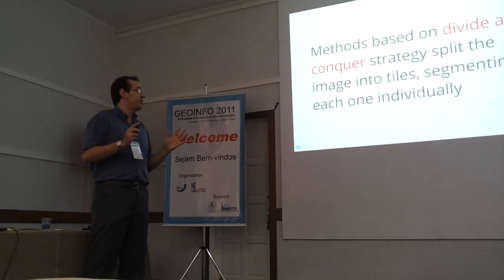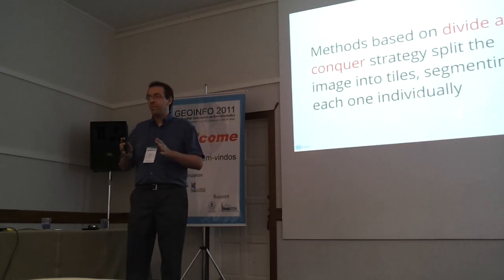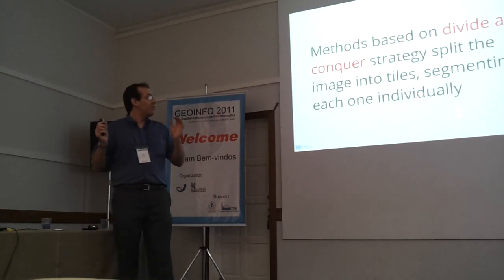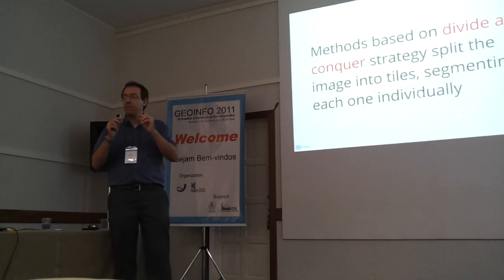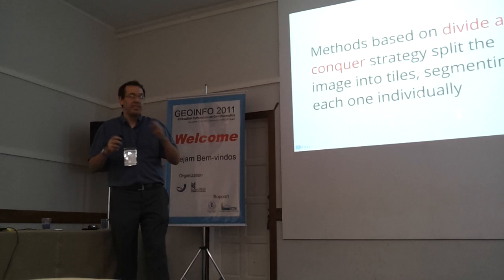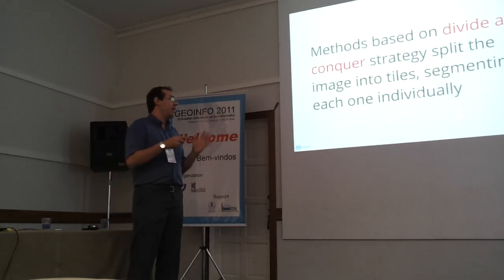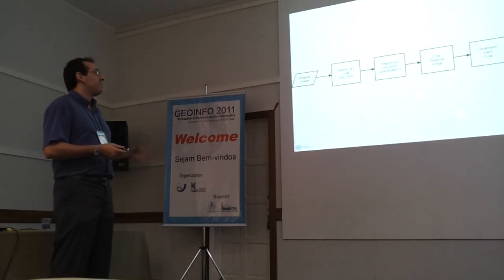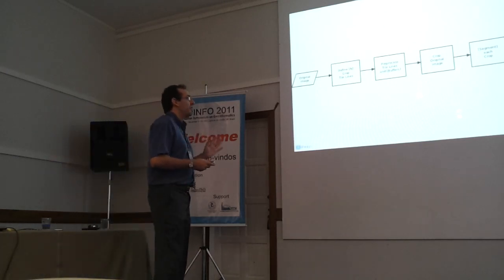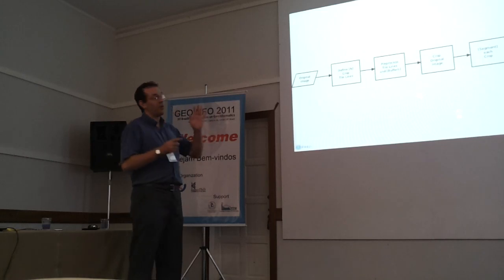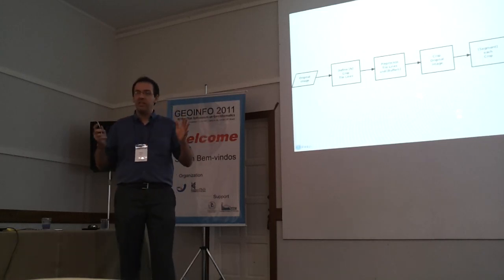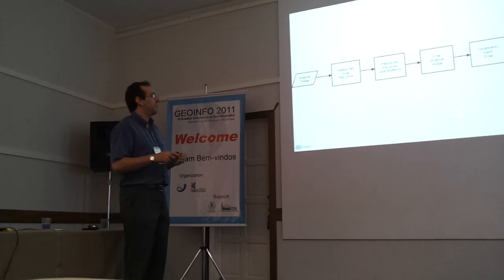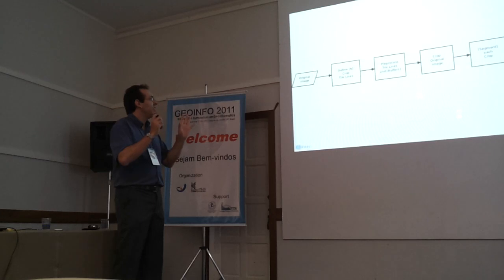There are already methods in the literature that use a divide and conquer strategy. In general, they first split the image into tiles, segment each tile individually, and then in a post-processing step try to merge the neighboring segments across tile boundaries. We are proposing a different approach, as I will explain now.